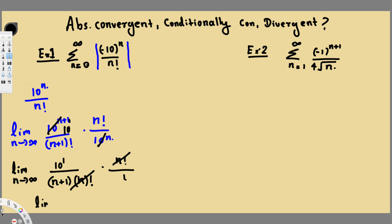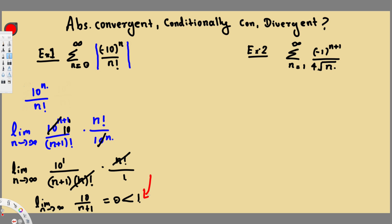So we have the limit as n approaches infinity of 10 over (n+1). If we substitute infinity, it's going to be 10 over infinity, which equals zero. We know that zero is less than one, so this is absolutely convergent. We don't have to do anything else — if we find absolutely convergent, that is it.